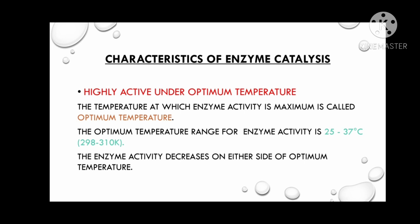The optimum temperature range for enzyme activity is 25 to 37 degrees Celsius. The optimum temperature for maximum enzyme activity is 37 degrees Celsius. The range is between 25 to 37 degrees Celsius.